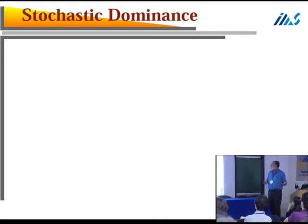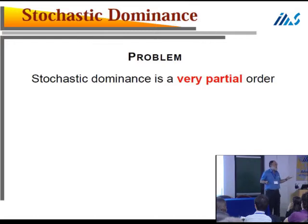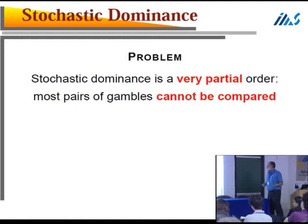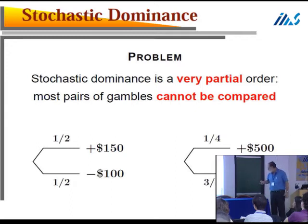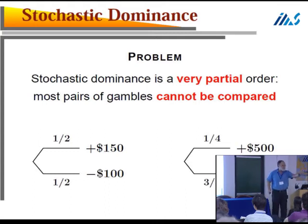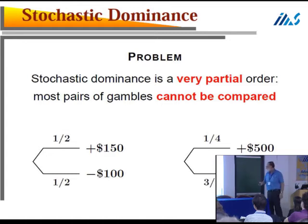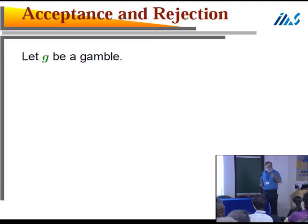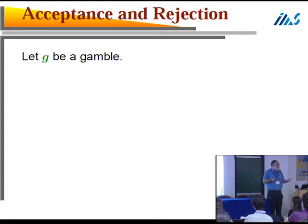The problem is that this is a very partial order — most pairs of gambles cannot be compared. Give me a pair of gambles and usually I won't be able to say one dominates the other. Most pairs you cannot compare. So is this the end of the road? No. Let's add another ingredient: when somebody offers you a gamble, unless you're a compulsive gambler, you can say no. Let's add the option of rejecting a gamble.